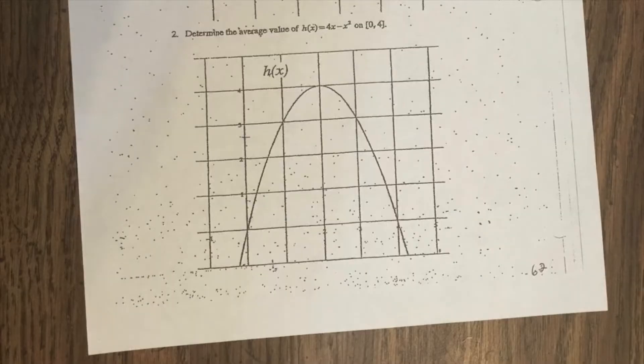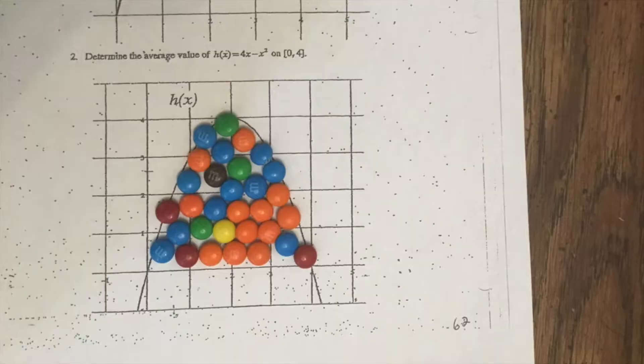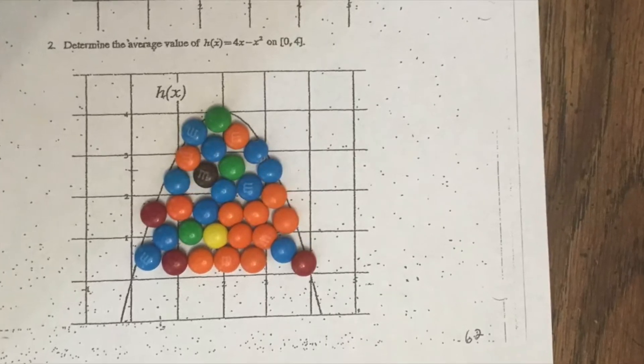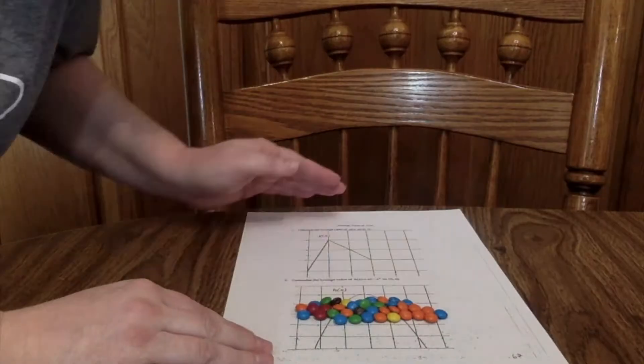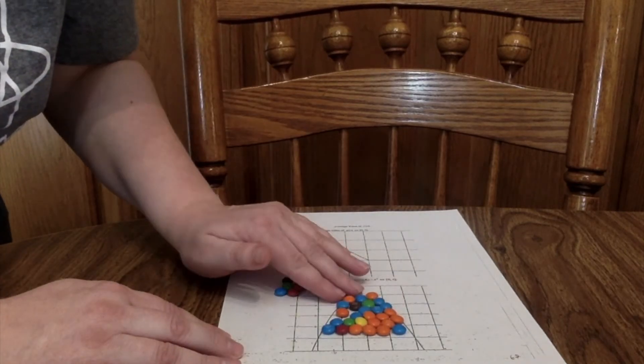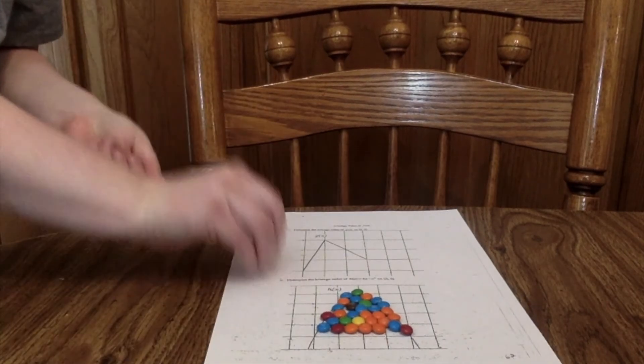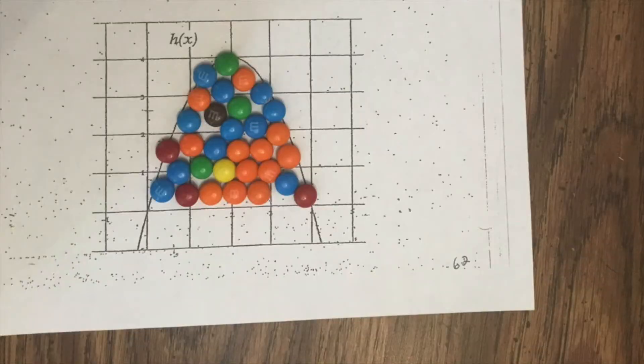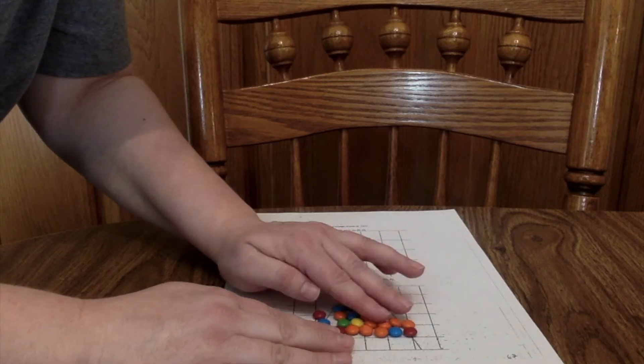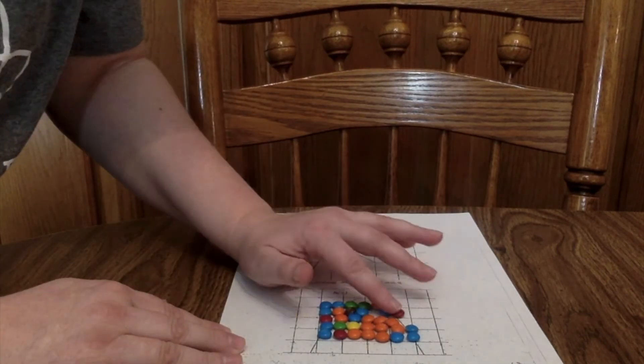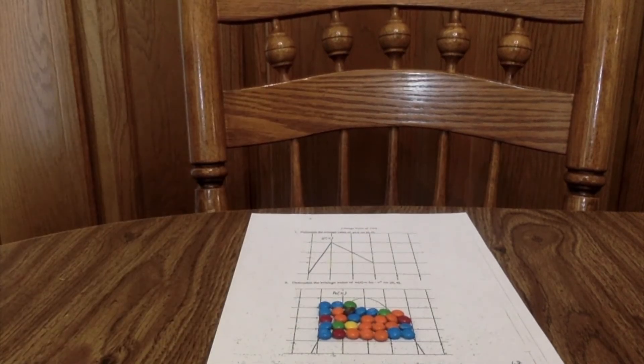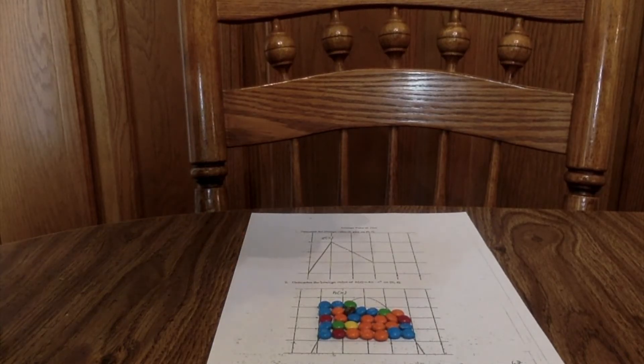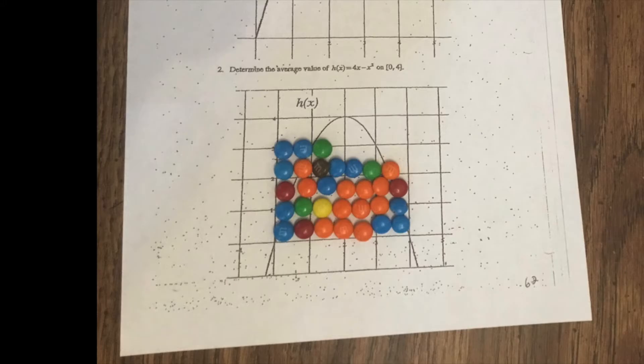So now we're going to do the mean value theorem again. We're going to fill up the part under the curve with the mini M&Ms. And we're going to take just those M&Ms and spread them out over the interval equally. In this case, it's from 0 to 4. Now we want to look at the top of the M&Ms to see what that y value is. And that will be the average value of this function from 0 to 4.